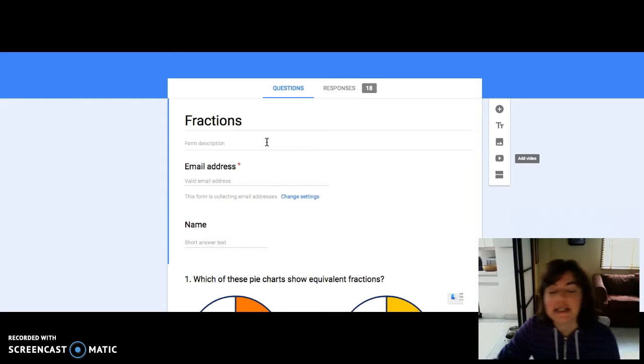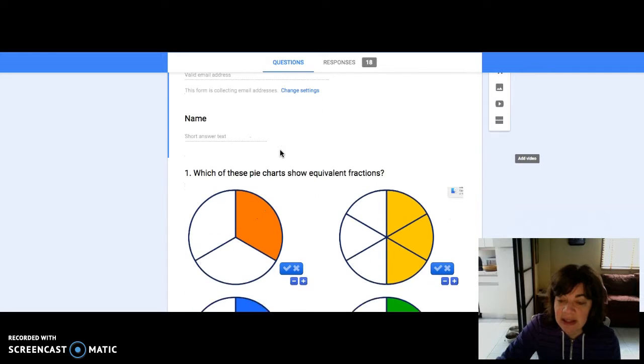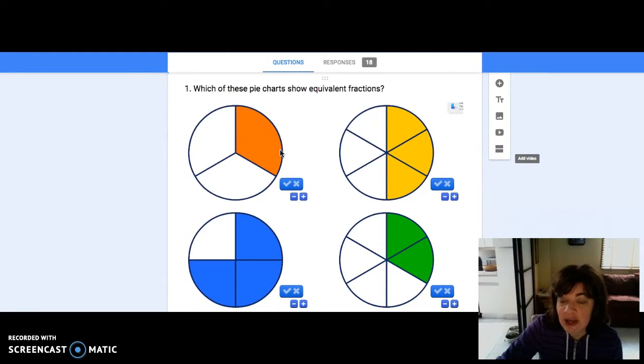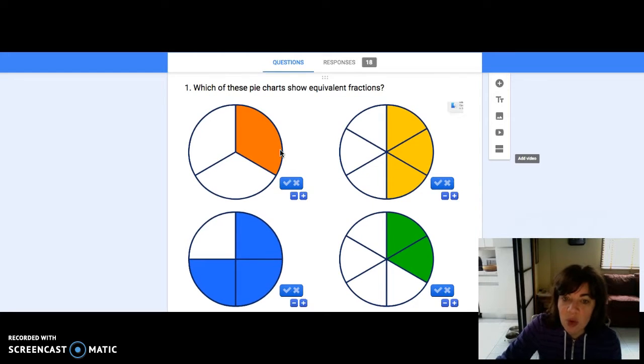Hi everyone. On Friday we took a quiz to see where we stand and what we understand about fractions. Now I'm going to explain each of the answers and you'll have an idea of where you went correct and where you still need to work. So the first one, most people got this one right: which of these pie charts show equivalent fractions?